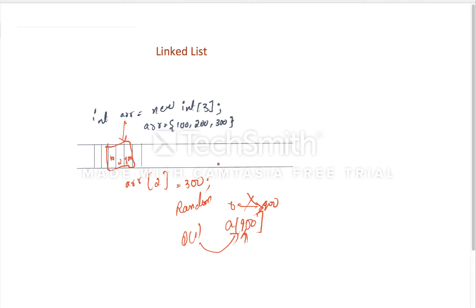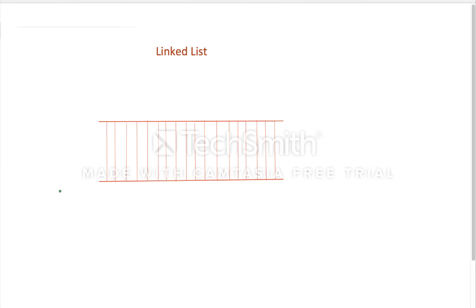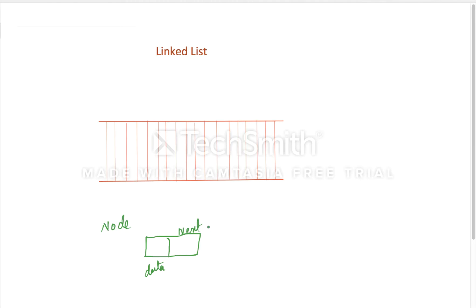Next, linked list. A linked list is made of nodes. So this is a linked list - the node is the fundamental unit of linked list. A node has two parts: first is data, second is next pointer. So first we will declare this node.